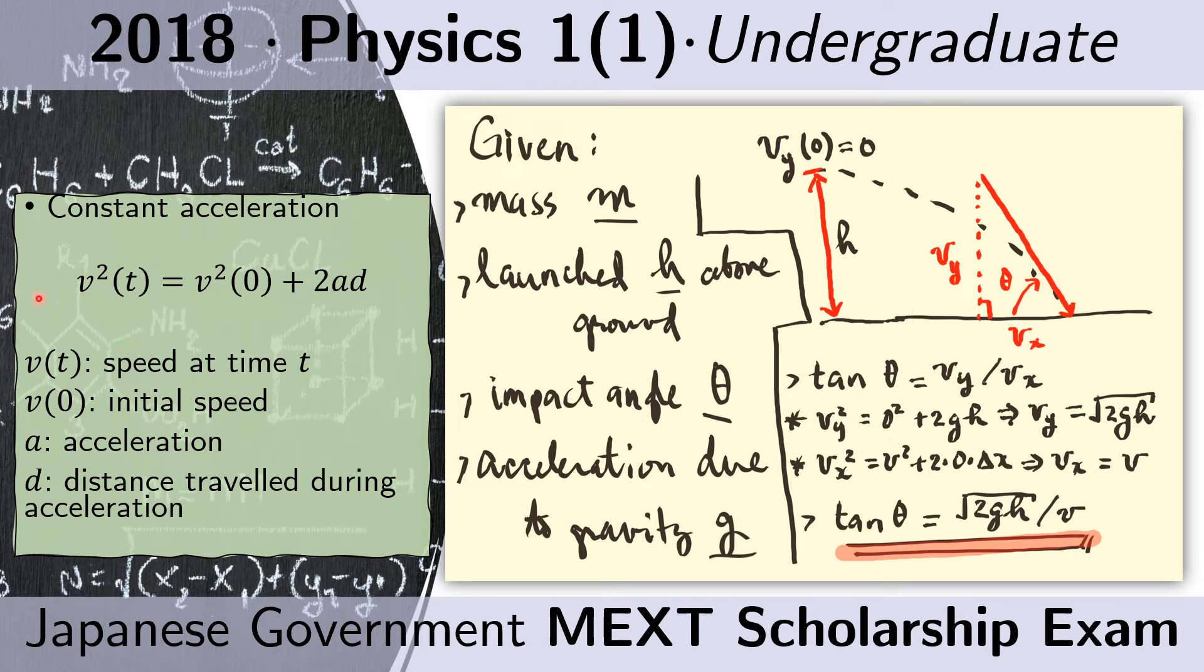So we use the formula that we got. The initial speed is zero because it was at rest initially. Then the acceleration is g, that's the acceleration due to gravity. And it travels h, that's the vertical distance it travels to the ground.